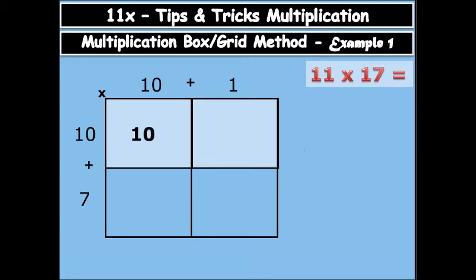So in the first box, you have 10 times 10 equals to 100, and then 1 times 10 equals to 10. Then you come, we have 10 times 7 equals to 70, and then 1 times 7 equals to 7.